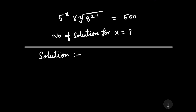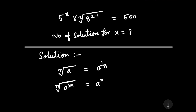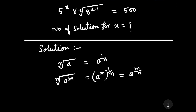To solve this question, we should know that the nth root of a can be written as a to the power 1 by n, and the nth root of a to the power m can be written as a to the power m by n. With the help of this formula, we will solve our question: 5 to the power x into x-th root of 8 to the power x minus 1 equals 500.